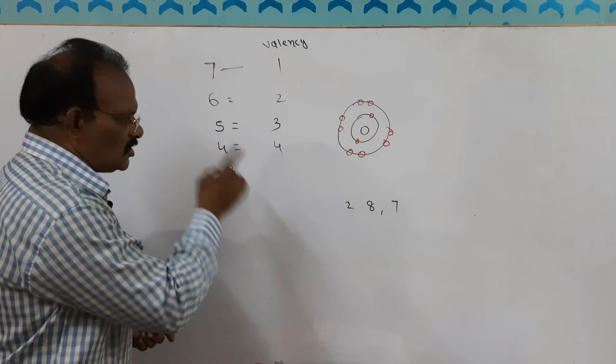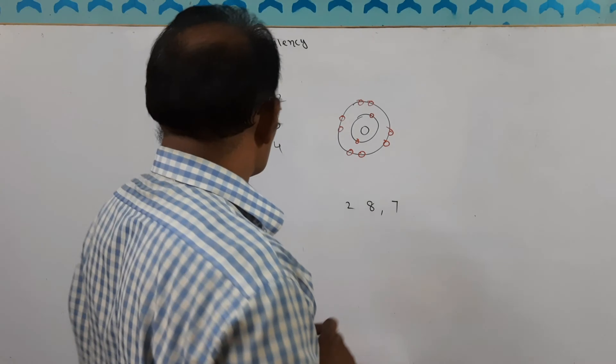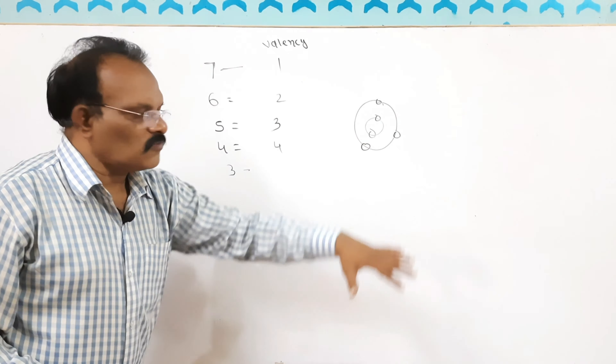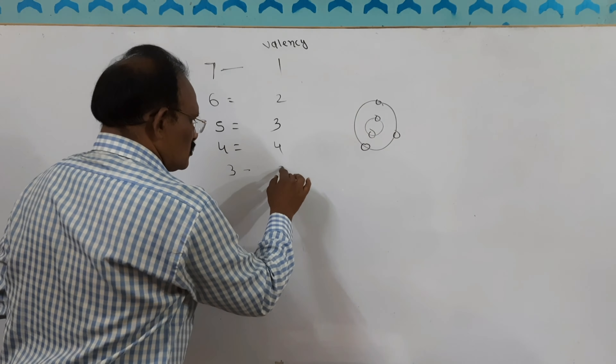For elements that have 3 electrons in the outermost shell, let's take boron as an example. Boron has atomic number 5: first shell 2, second shell 3. To complete the octet, it would need 5 more electrons. But instead, all 3 electrons move toward the element that requires 3 — so boron gives out its 3 electrons. Therefore, its valency is 3. Don't get confused: those who have 5 in the outermost have valency 3, and those who have 3 in the outermost also have valency 3 — but the reason differs. An element with 3 doesn't have the power to pull 5 electrons.